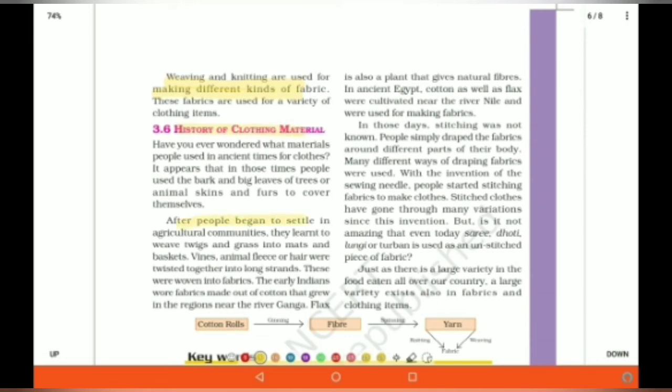After people began to settle in agricultural communities, they learned to weave twigs and grass into mats and baskets. Vines, annual fleas and hair were twisted together into long strands. These were woven into fabrics. The early Indians wore fabrics made up of cotton that grew in regions near the river Ganga. Flax is also a plant that gives natural fibers. In ancient Egypt, cotton as well as flax were cultivated near the river Nile. These both are fiber-giving plants.